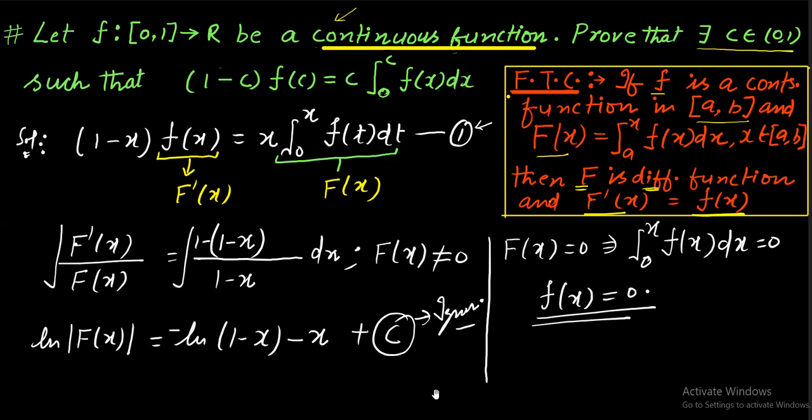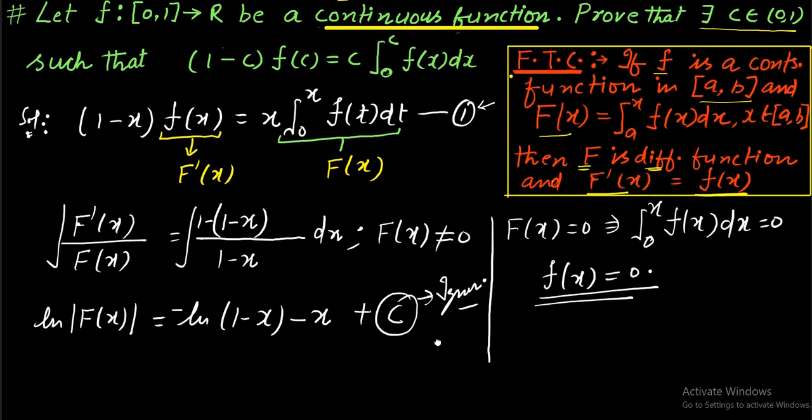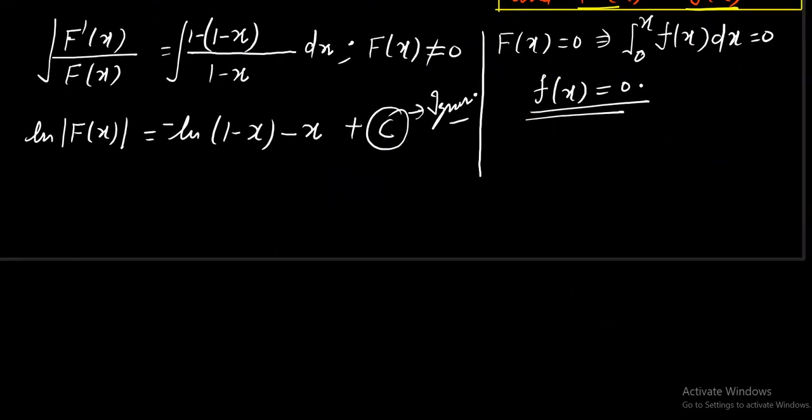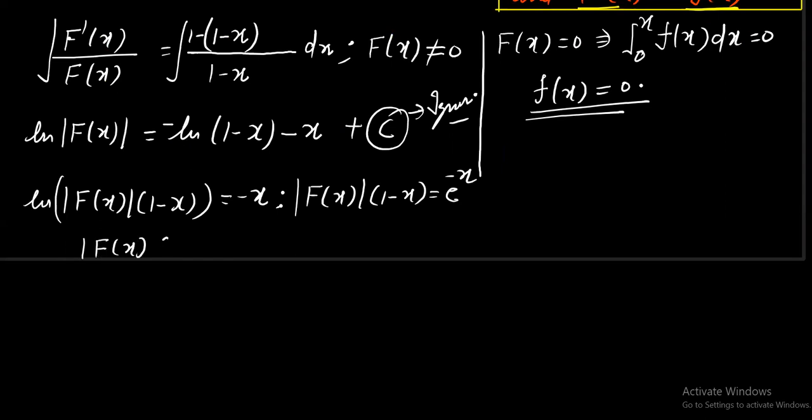Because ultimately, we have to take derivative of this to apply Rolle's theorem. Now, simplify it. Left hand side will become ln|F(x)(1-x)|. Right hand side is -x. After one step, we can write it as |F(x)(1-x)| = e⁻ˣ, which is same as |F(x)(1-x)eˣ| = 1.